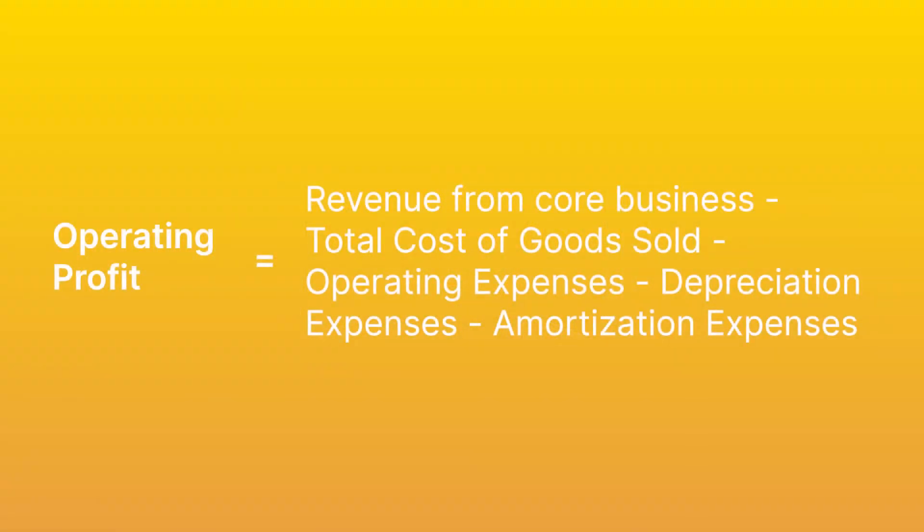Operating profit is the profit generated from the core business of a company before accounting for any interest or taxes. Operating profit excludes things like income from investments, capital gains on asset sales, rental income, bank account statements, dividends, and miscellaneous earnings.